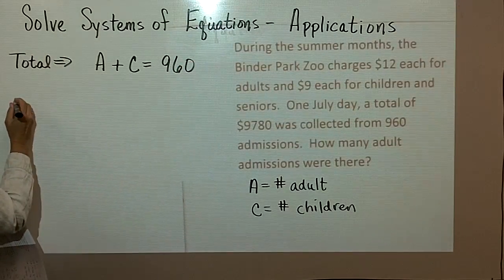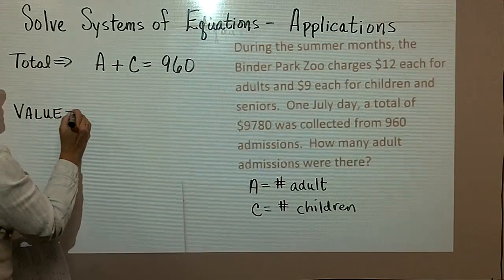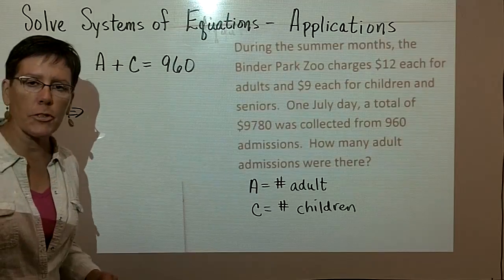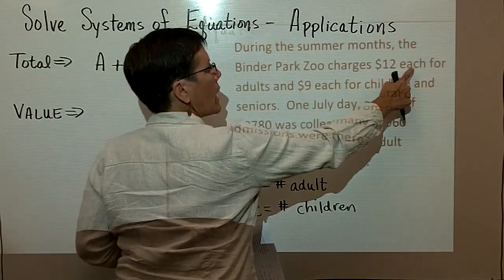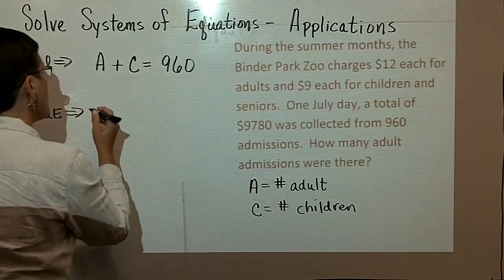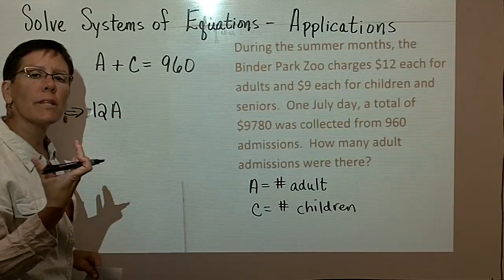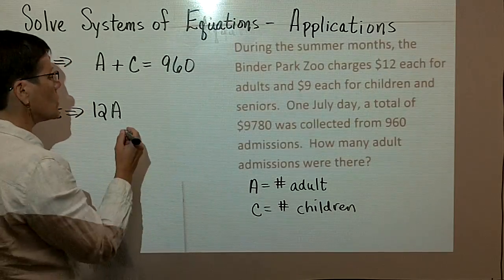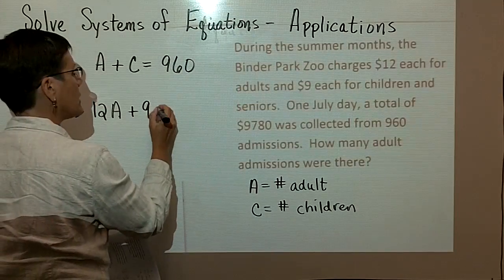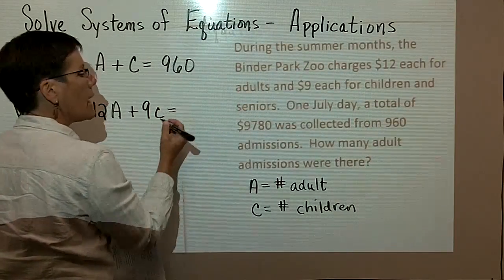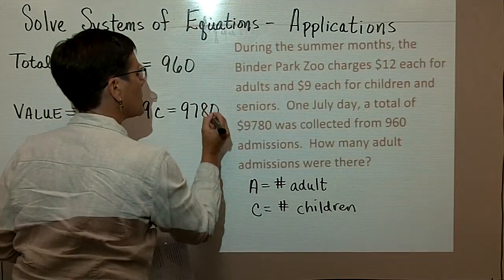Next, I'm going to ask you to write a value statement. In this particular case, $12 each for an adult. So I'm going to put here 12 times A, the number of adults. That would be the value of adult tickets sold. Plus, children's tickets are $9, so $9 times C. And the total collected was $9,780.